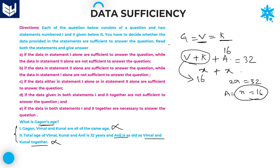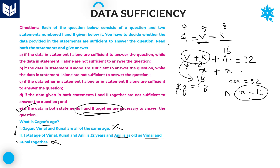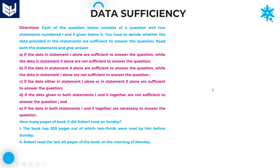Even combining both statements, we know the sum of Vimal and Kunal's ages is 16. From statement 1, Vimal and Kunal have the same age, so let Vimal = y and Kunal = y: 2y = 16, therefore y = 8. So Gagan = Vimal = Kunal = 8 years. You get the answer by combining both statements together, so option E is the right answer.